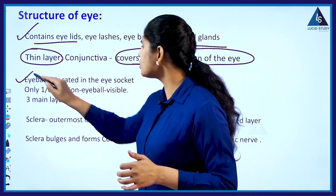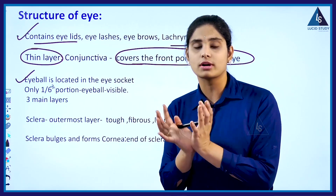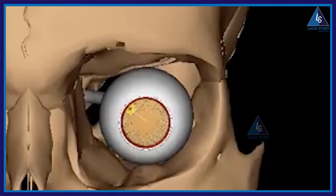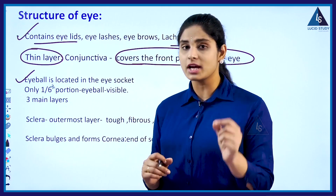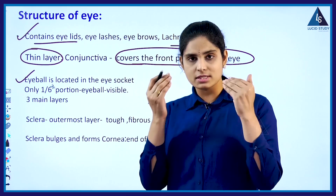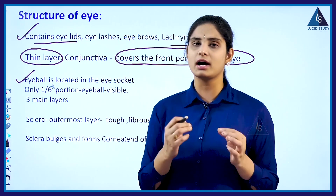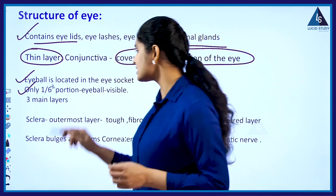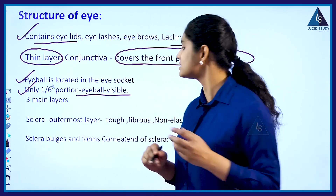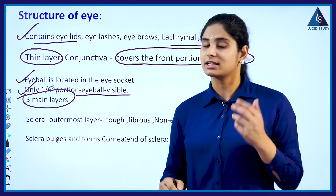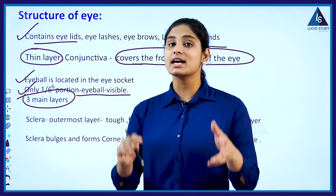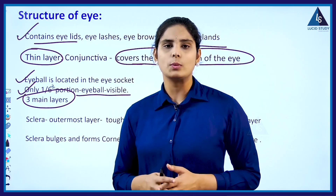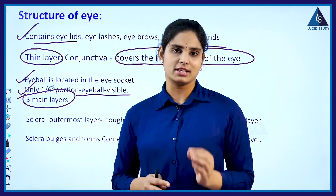The eyeball is located in a particular location called the eye socket. An important point is that only one-sixth part of the eyeball is the visible part. The eyeball contains three layers: the first is the sclerotic layer or sclera, the second is the choroid layer, and the third is the retina.